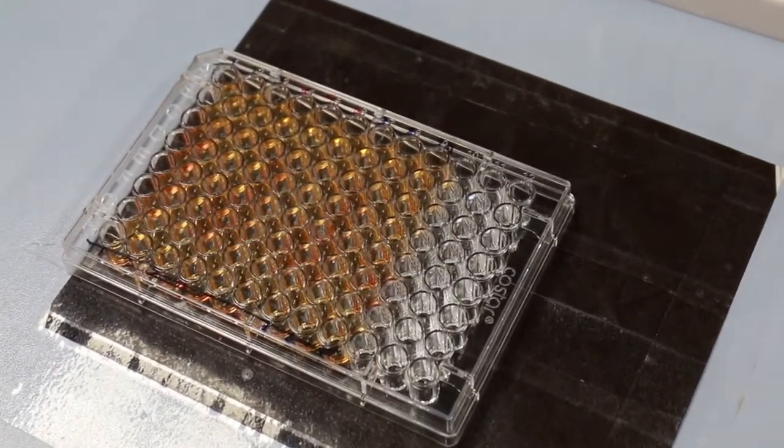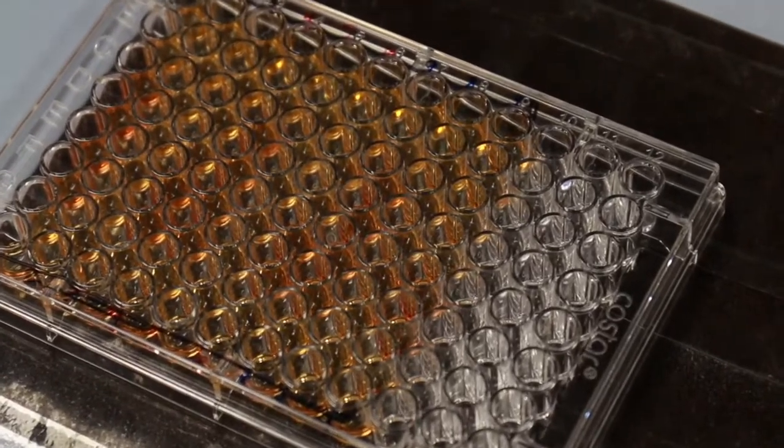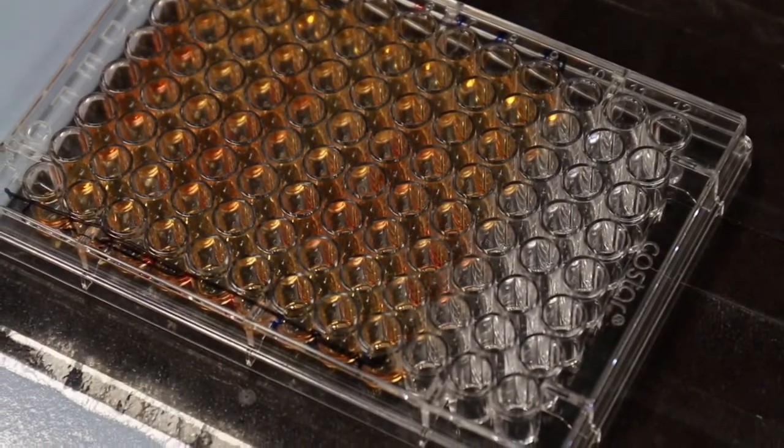When pipetting into clear wells, putting a piece of black paper under the plate can help to make the bottom of the well more visible.